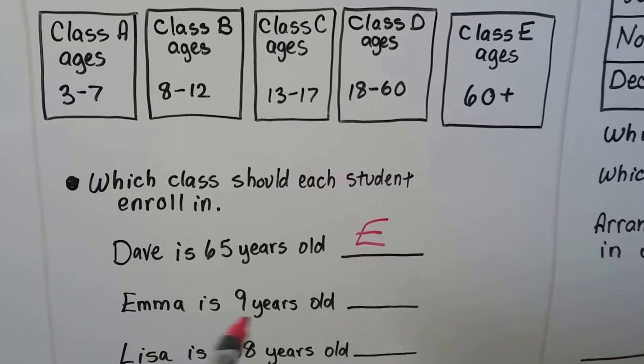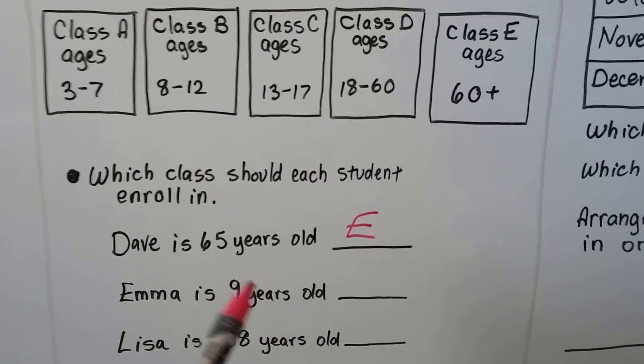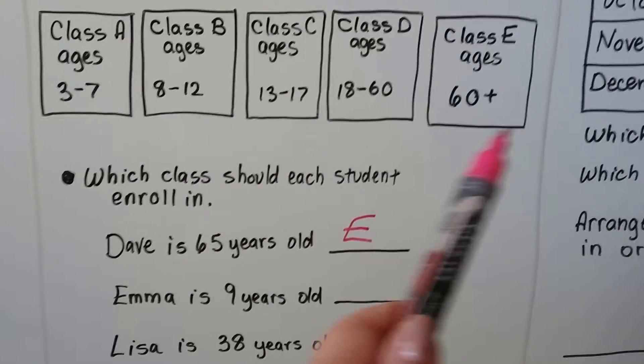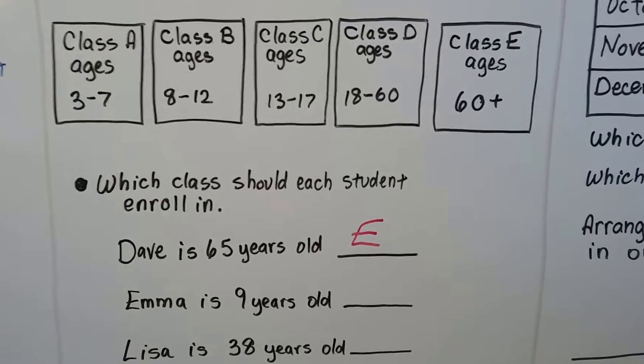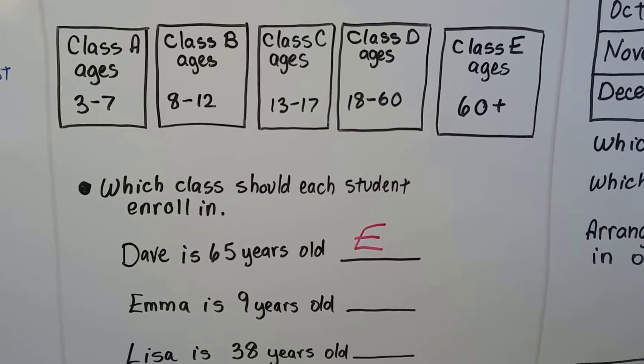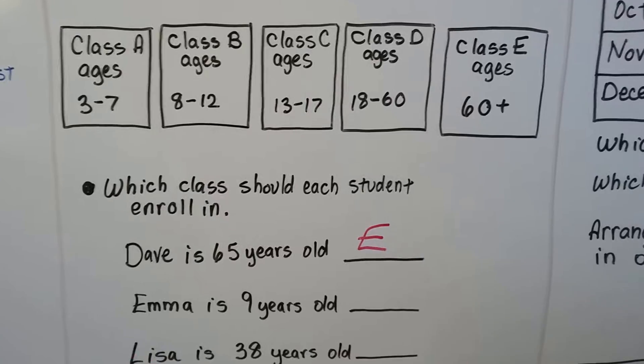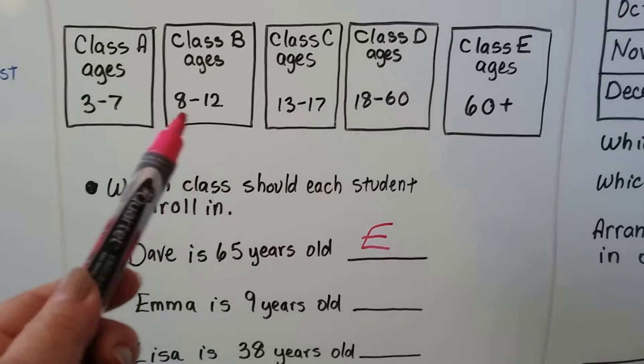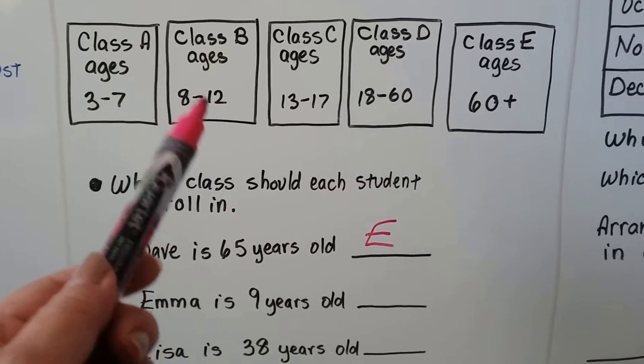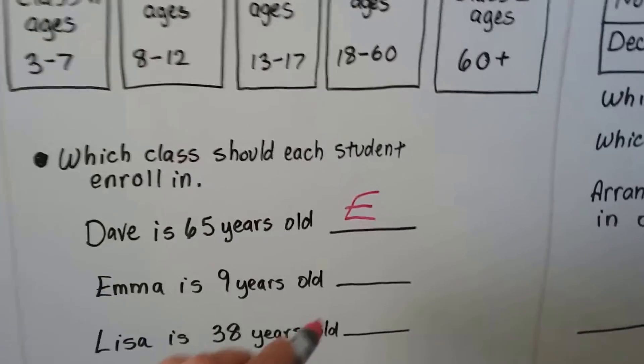Emma is 9 years old. Which class should she be in? Well, 9 falls in between 8 and 12, so she would be in Class B.